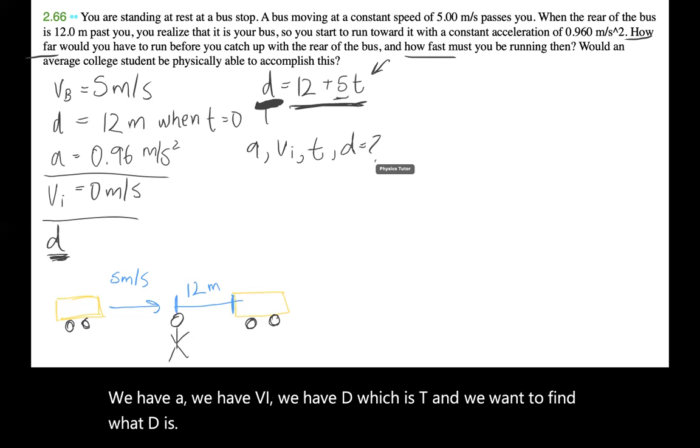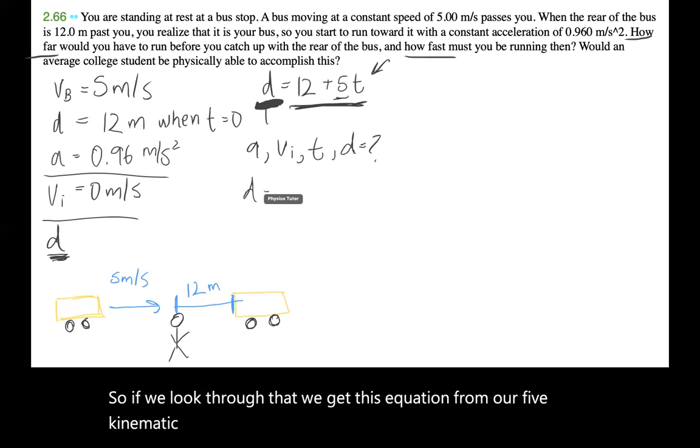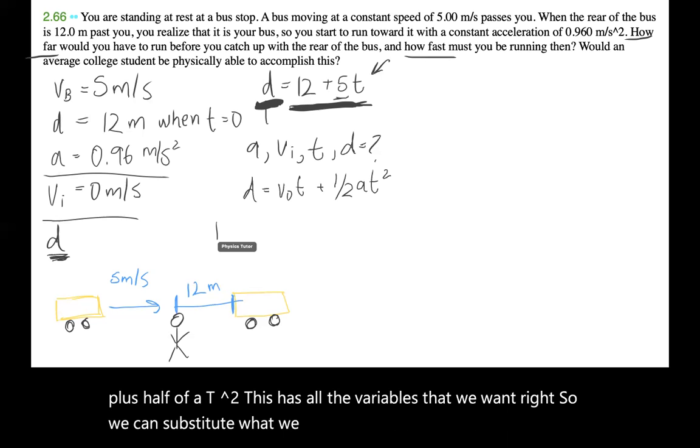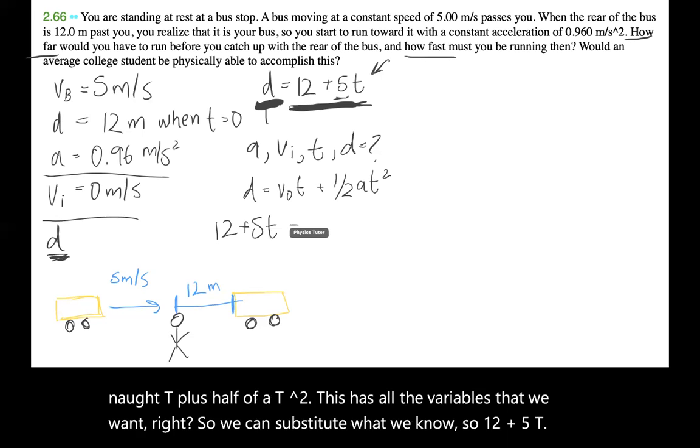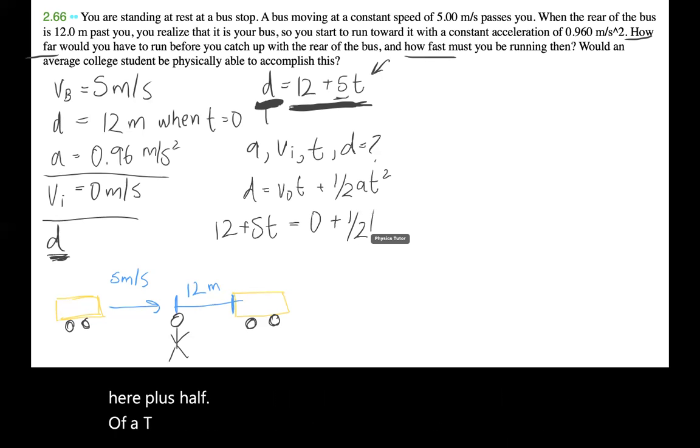So if we look through that, we get this equation from our five kinematic equations. This is the equation that we have: d equals v naught t plus half of a t squared. This has all the variables that we want. So we can substitute what we know. So 12 plus 5t is equal to v naught, which is zero, so we can kind of just write zero right here, plus half of a t squared. a is 0.96, and then t squared. And now all we have to do is isolate for t and then sub t into one of these equations.